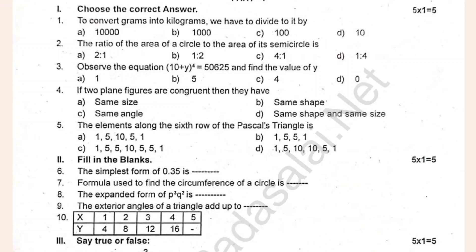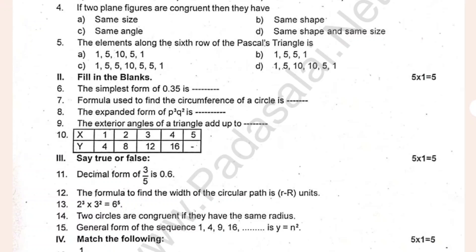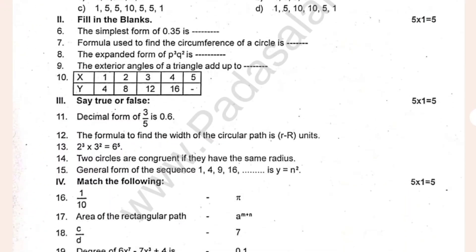To choose grams into kilograms, we have to divide it by dash. The area of the semicircle is dash. Observe the equation. If two plane figures are congruent, then they have dash. The elements along the sixth row of the Pascal's triangle is dash. So, one marks. Choose it or the fill-ups. Fill-ups is true or false.